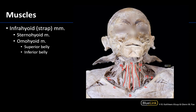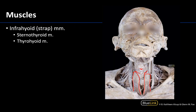The thyrohyoid will fill in the rest of the space from the oblique line of the thyroid cartilage all the way up to the hyoid bone. So this will be the thyrohyoid, because here is your hyoid bone. These infrahyoid muscles are super intuitive once you learn their names because they explicitly describe their attachment points, which will help you with identification.